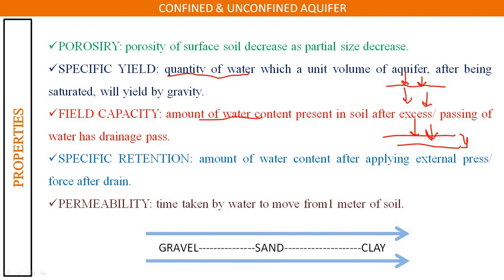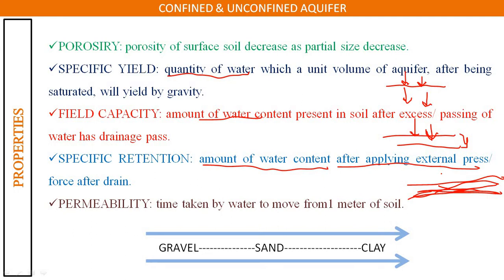Specific retention means the amount of water contained in a soil layer after applying external pressure. If we apply external pressure to remove water from the soil, the water content which remains in the layer after that pressure is applied is known as specific retention.